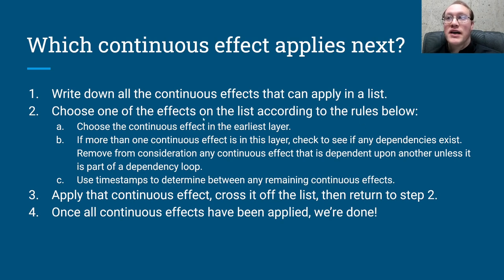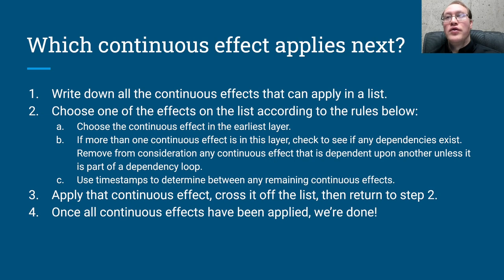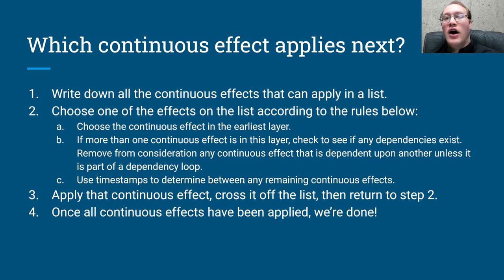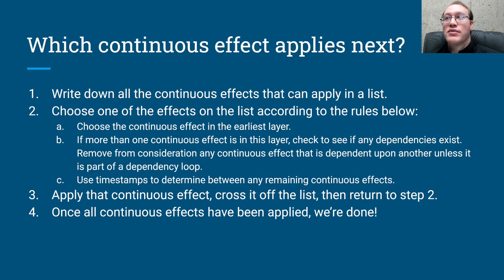What we're going to do is write down all the continuous effects that need to apply in a list, then choose one from that list to apply, apply it, cross it off, and keep going until we've applied through all of the continuous effects. One interesting thing I want to point out is that the list order is not set in stone at the very beginning. After we apply every single continuous effect, we have to check to see if there are any new dependencies that applying that effect caused to happen, or if any dependencies that used to exist no longer do. That's something that's not generally something a lot of people think about when learning dependencies, but it might come up in the next few minutes.